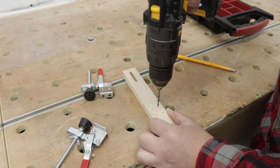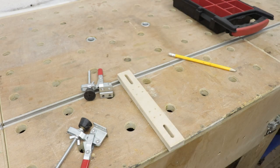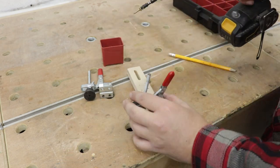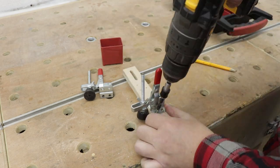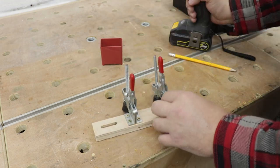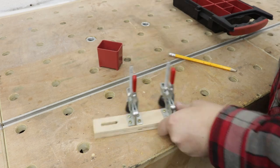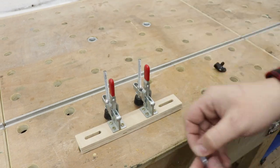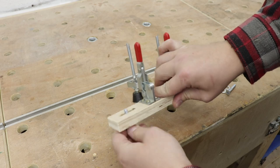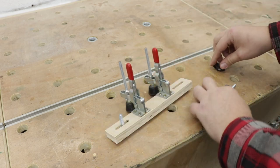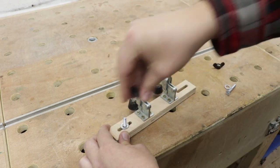And for my clamping solution I'm gonna use toggle clamps. They are perfect in this scenario. Now let's add the bolts and some star knobs. I'm gonna add a washer as well.